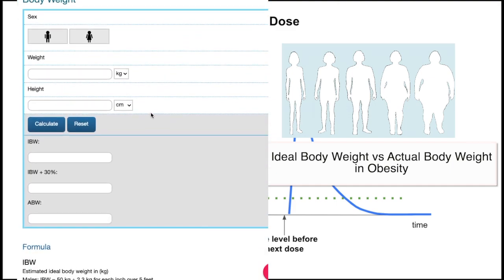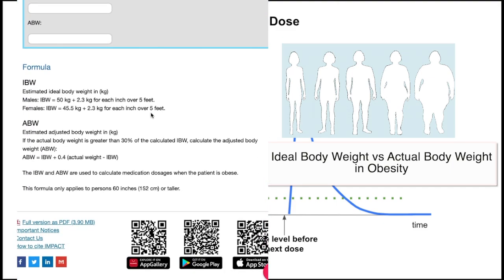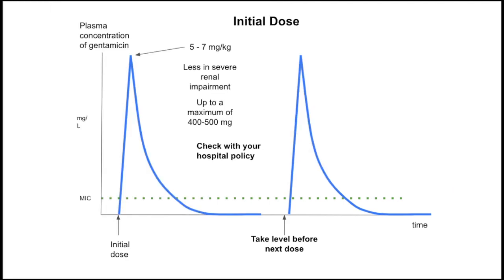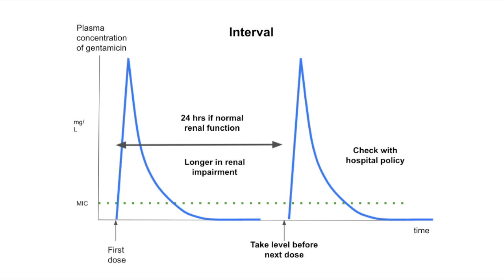You can manually calculate ideal body weight using a standard formula, and there are also ideal body weight calculators online. Once you decide on the initial dose, the next thing is to decide on the interval. For a person with normal renal function the standard interval is 24 hours. If the patient has impaired renal function, you need to increase the interval to 36 or 48 hours.